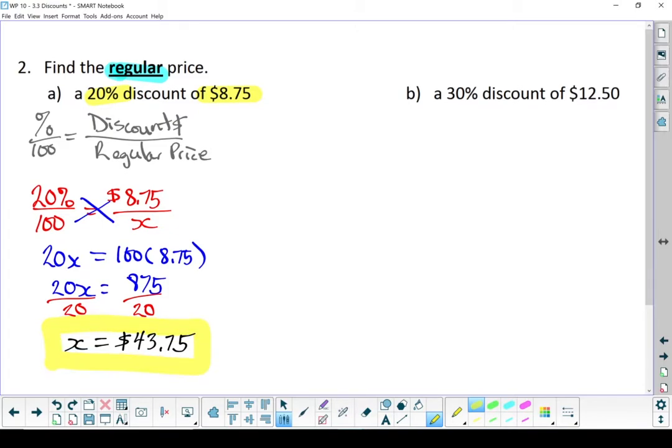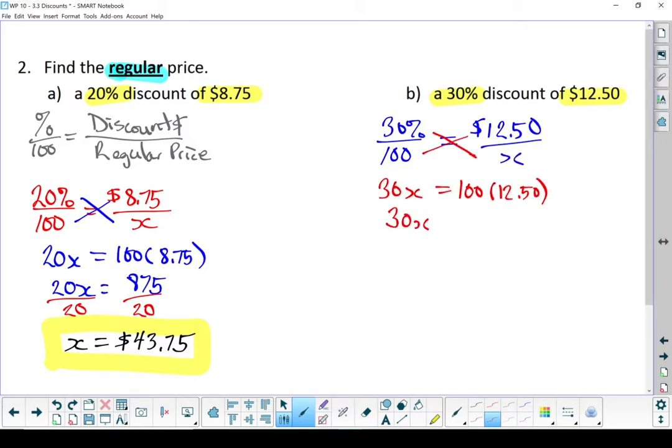One more time. I've got a 30% discount, and the discount in dollars is $12.50. That's what I saved. What's my regular price? X is $41.67. There is my original price.